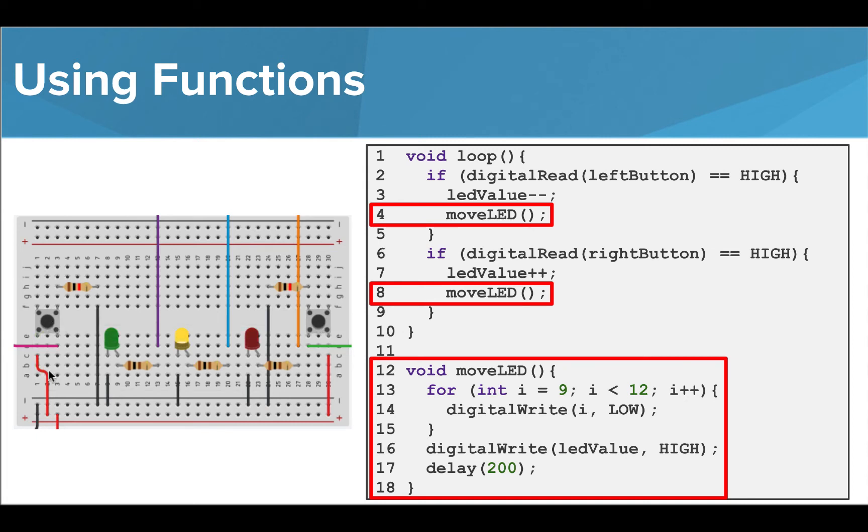When the right button is pressed, it moves to the right after the LED variable is increased by one and the moveLED function is called.